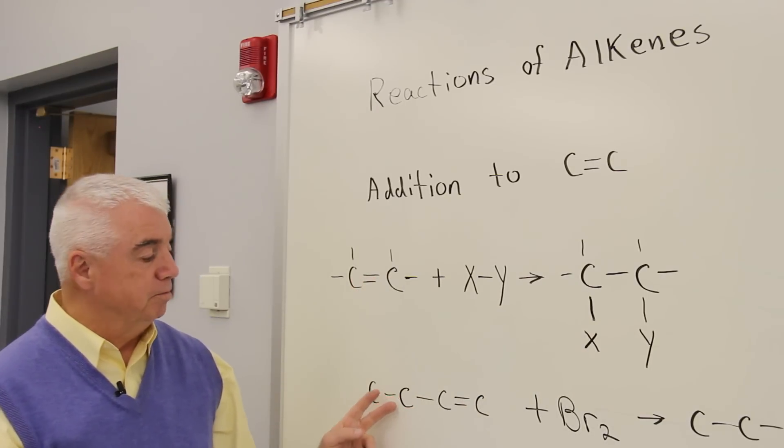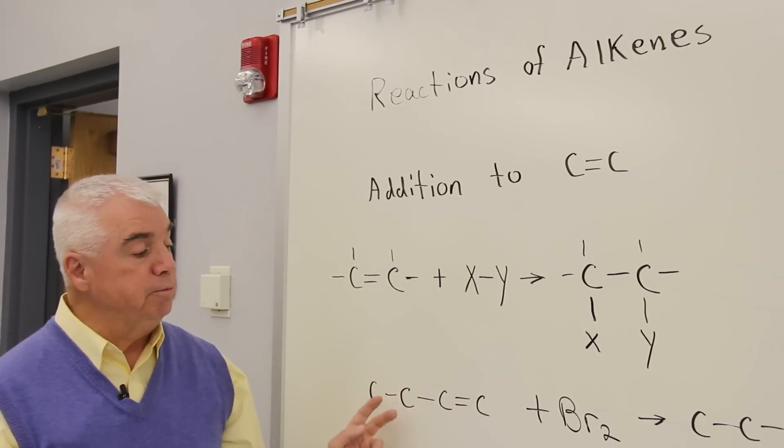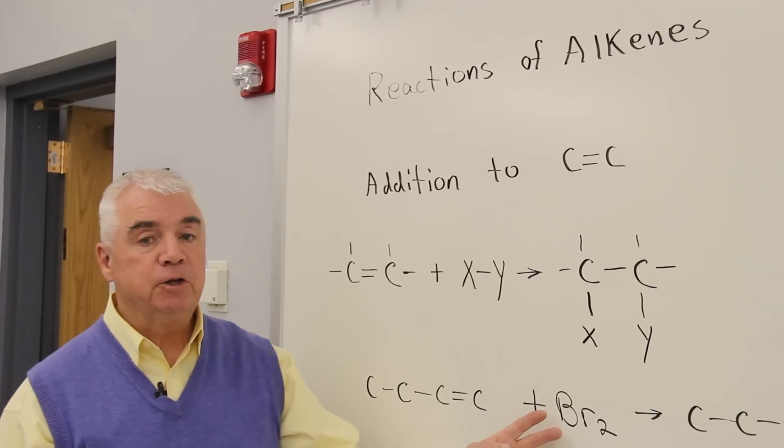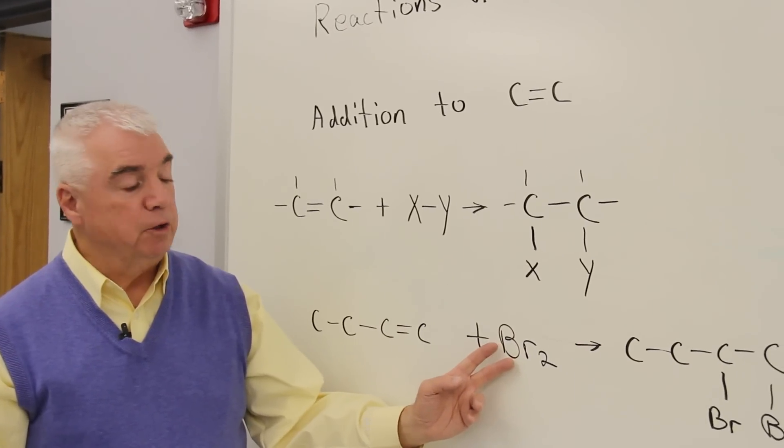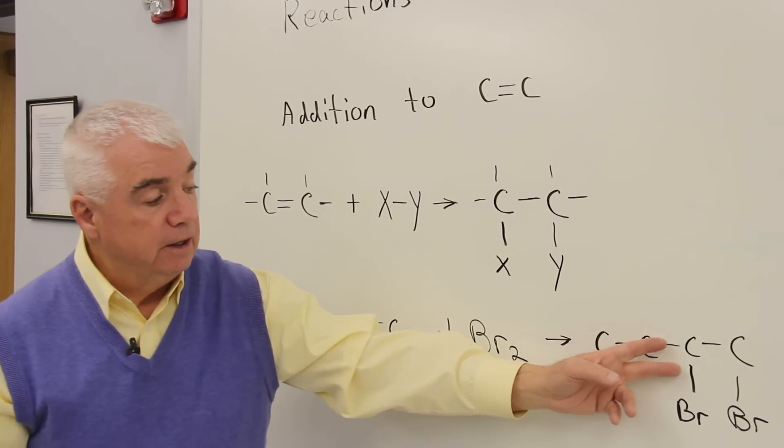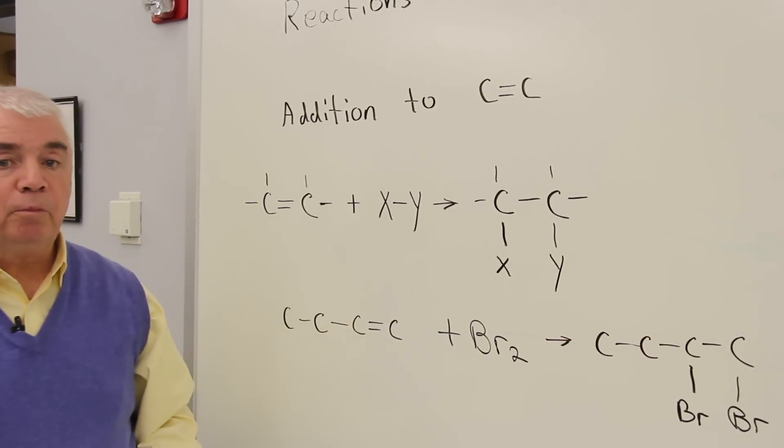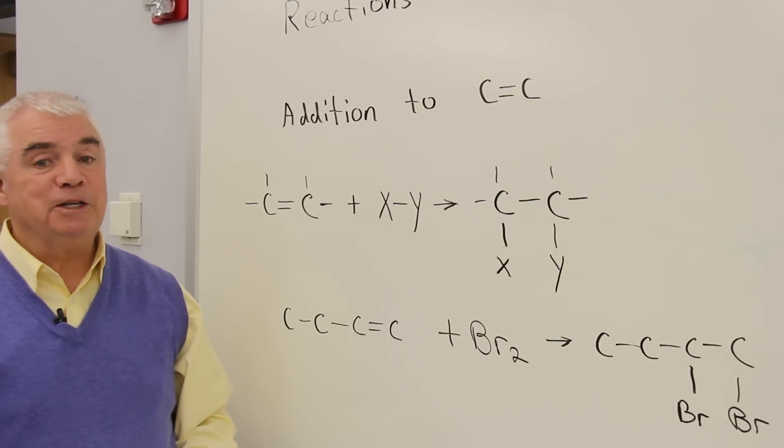Let's look at an example. Here, I've got a butene structure, it's 1-butene, and we're adding to it bromine. Both sides of the reagent would be the same, a bromine and a bromine. Double bond disappears. One carbon picks up the bromine, and the other carbon picks up the other bromine. That's pretty typical.